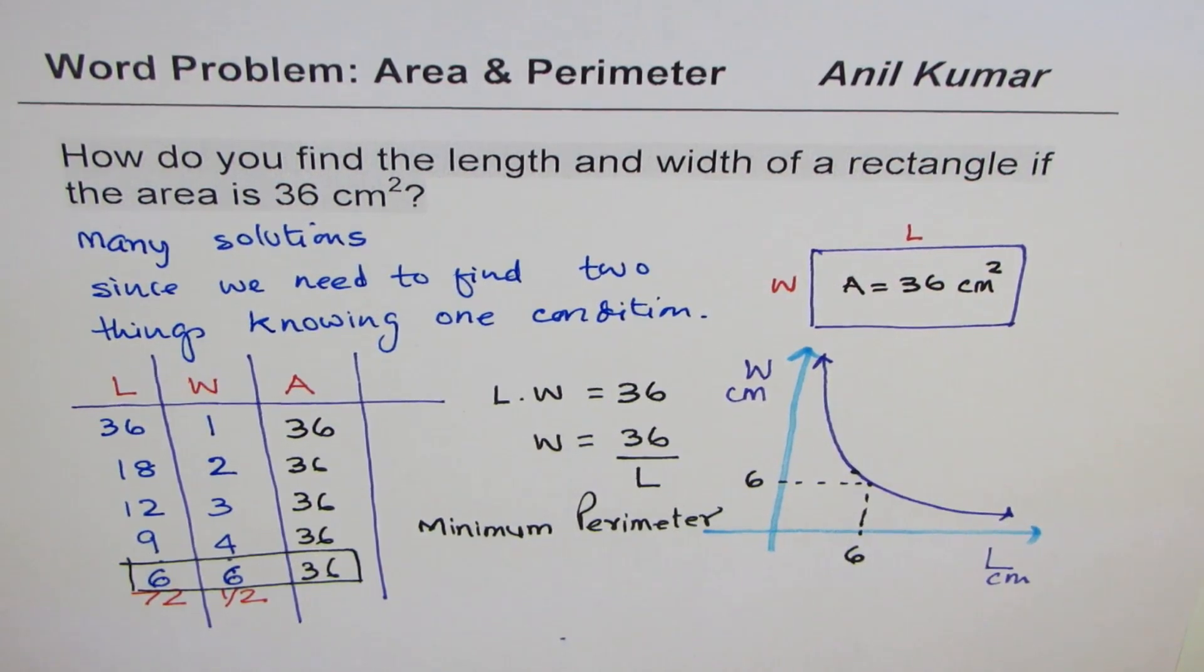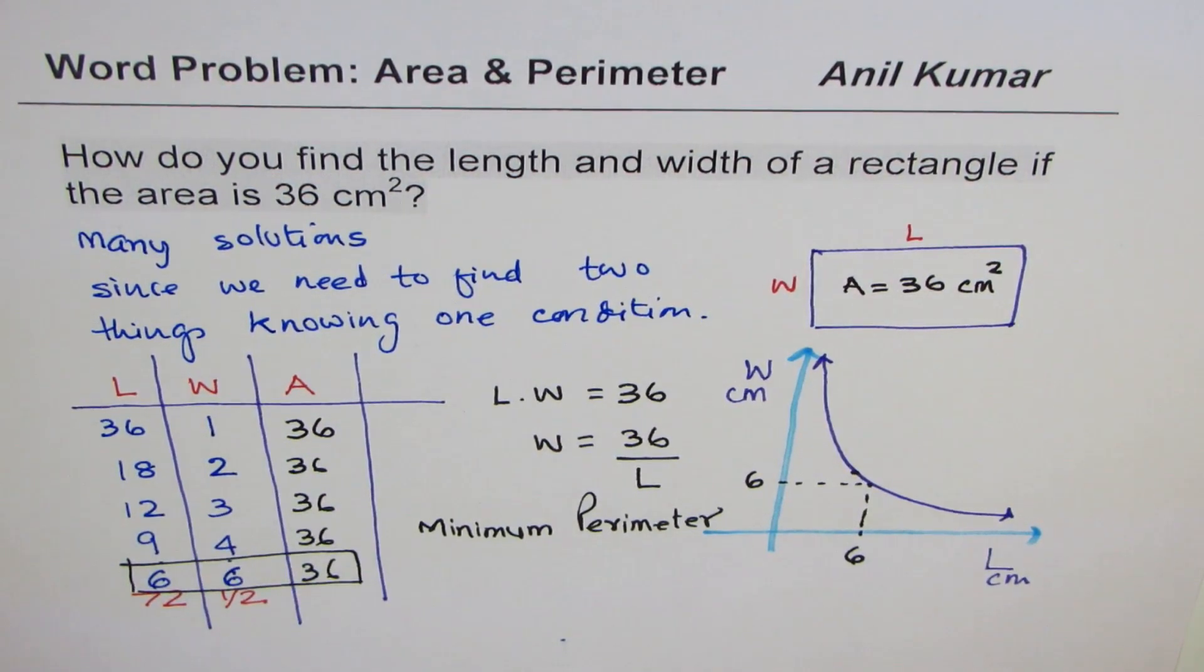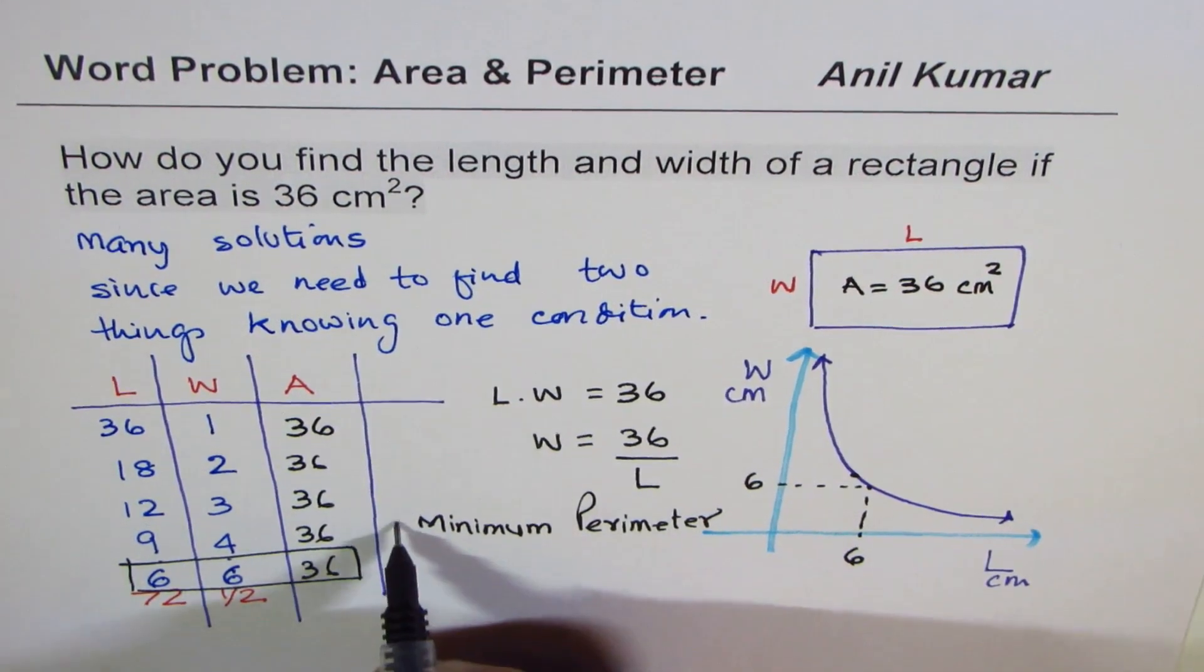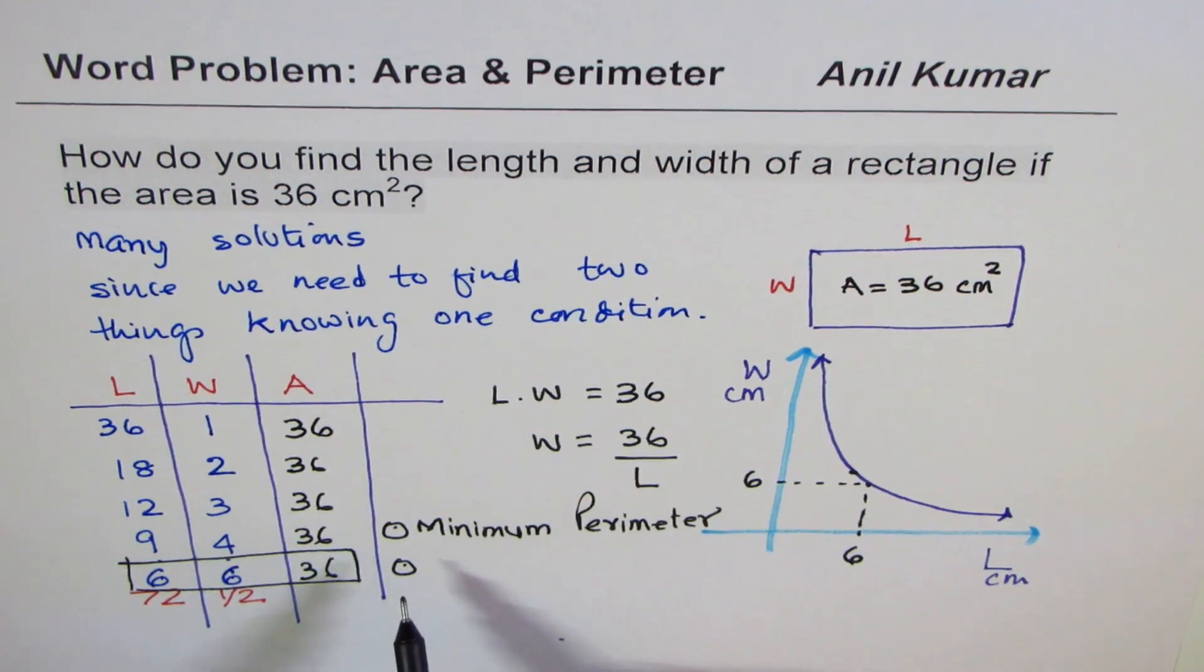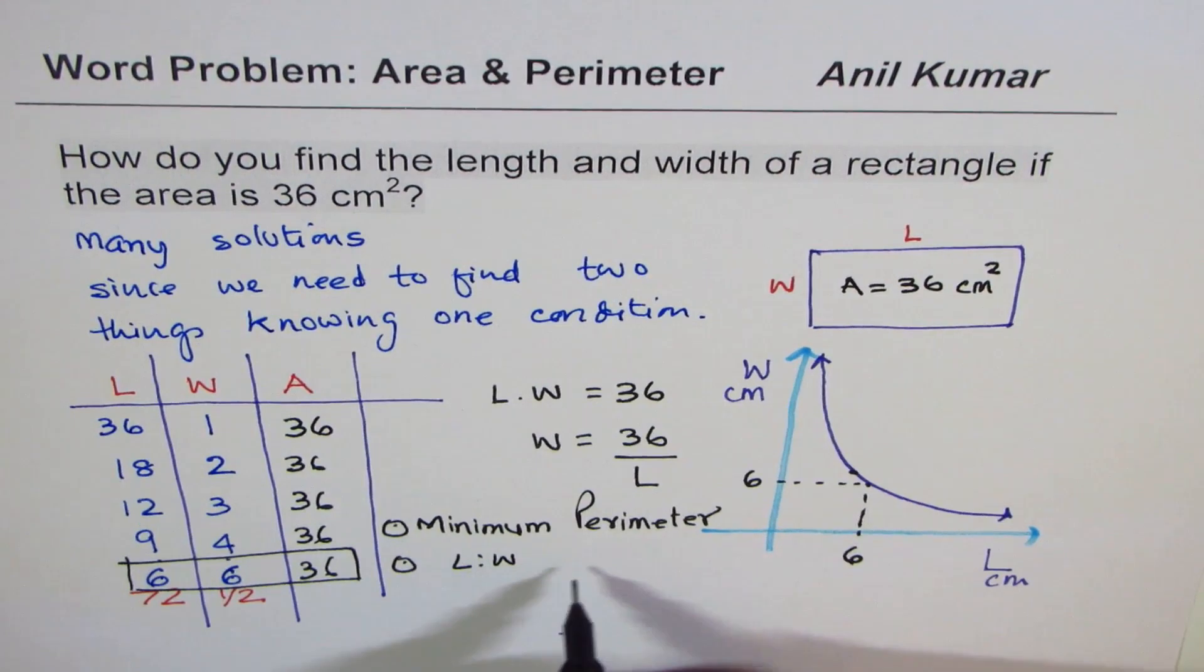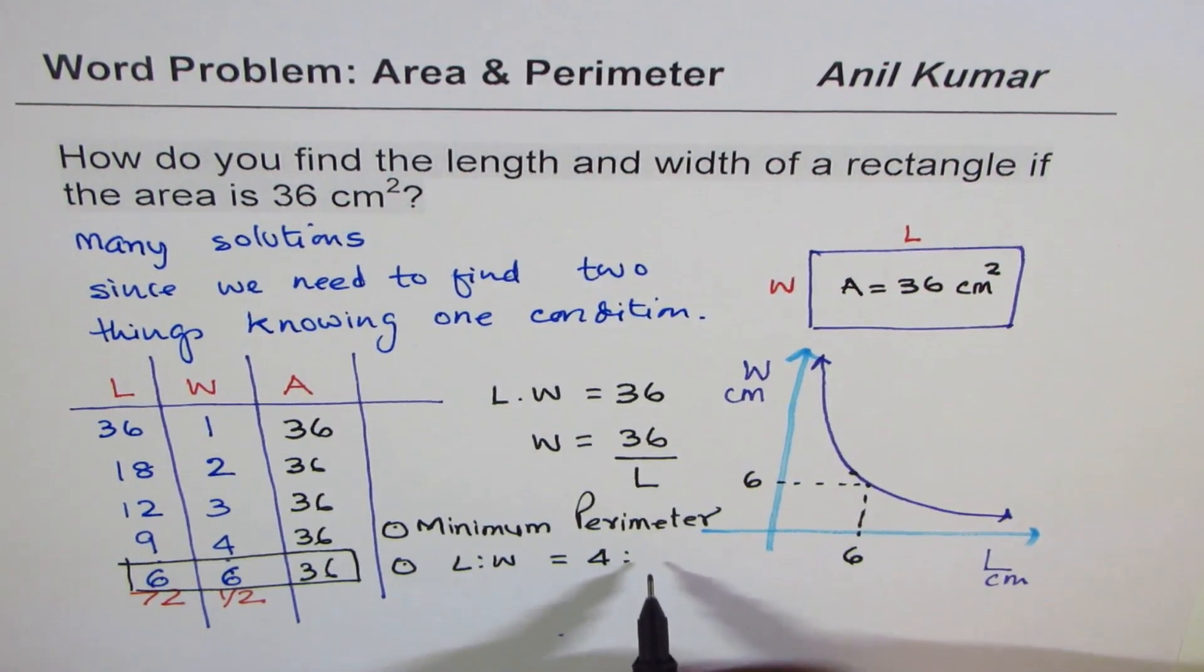But if conditions are not given to us, then it's an open-ended question. And we have all possible solutions. So as we did one of the videos, what will be the dimensions? That could be one question out of this. The second question could be, what could be the dimensions where the ratio of length to width is equal to, let's say 4 is to 2?